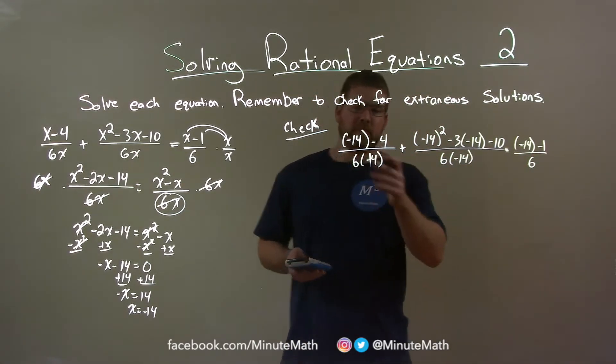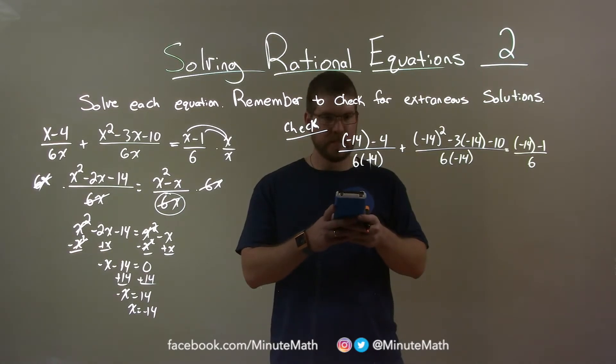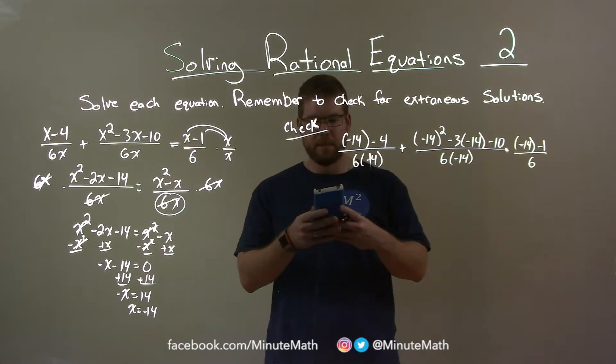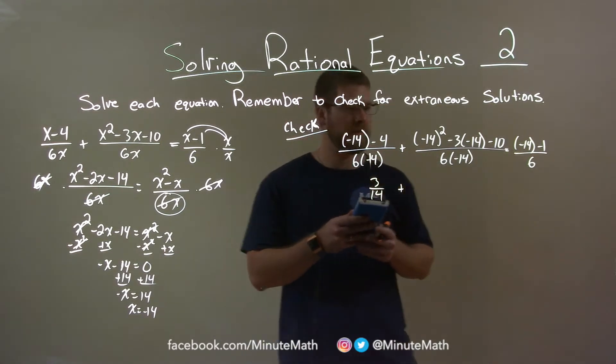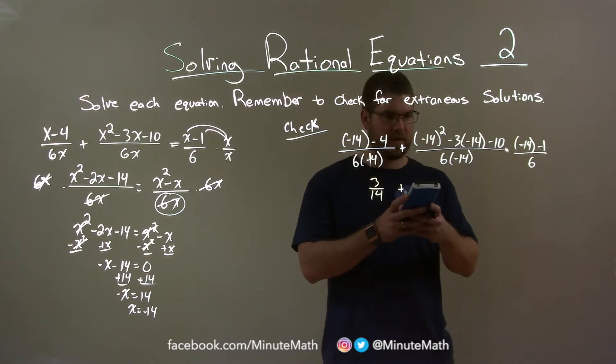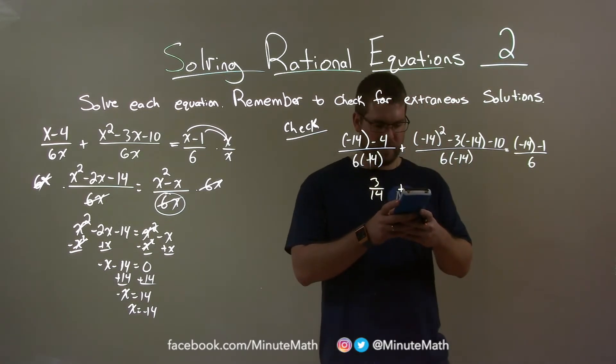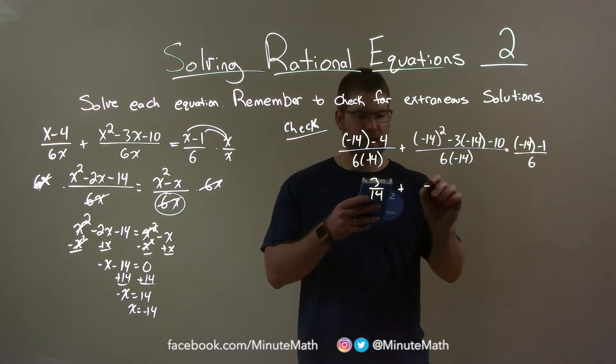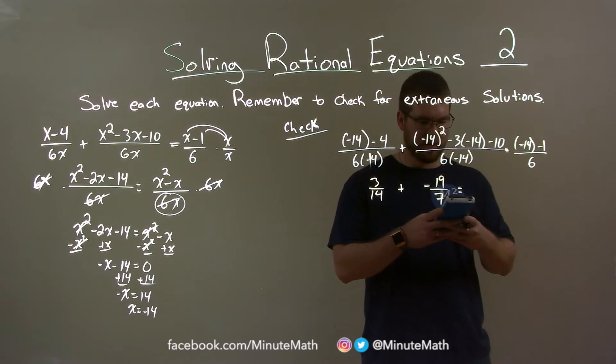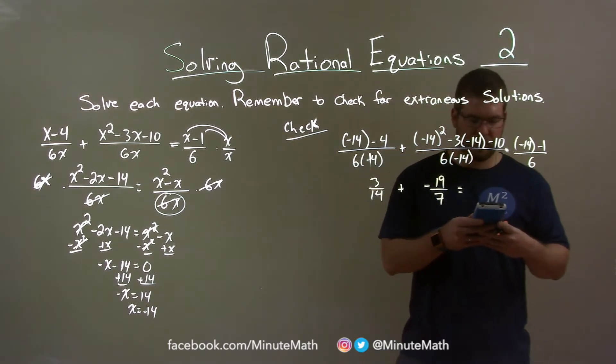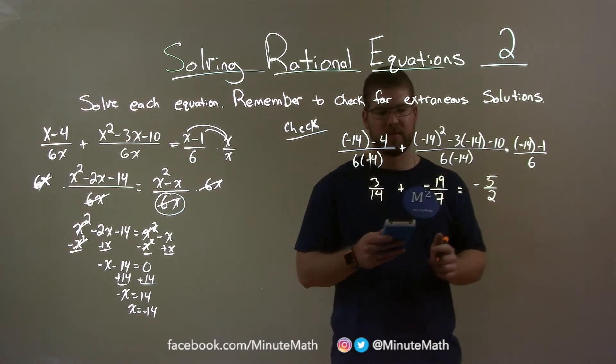So let's simplify. Let's get this part here. Negative 14 minus 4 divided by 6 times the negative 14. And this as a fraction is 3 over 14. Plus here, negative 14 squared minus 3 times negative 14 minus 10 divided by 6 times negative 14. And that as a fraction is negative 19 over 7. All the way to the right, negative 14 minus 1 divided by 6. And as a fraction, that's just negative 5 halves.